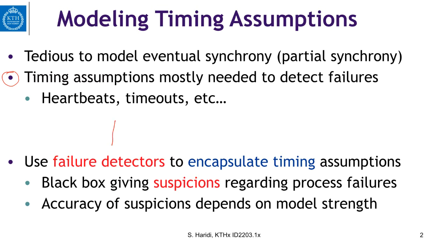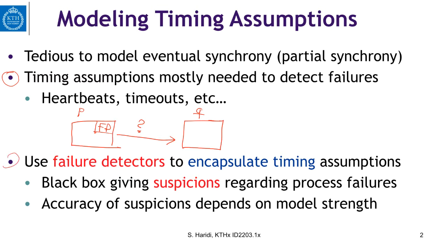If we have a process P and other processes like process Q, each process will have a device called a failure detector. This failure detector will give an opinion about whether other processes have failed or are still alive. We use failure detectors to encapsulate timing assumptions — it is a black box giving suspicions regarding process failure. The accuracy of suspicions, whether your suspicions are correct or wrong, will depend on the strength of the model.